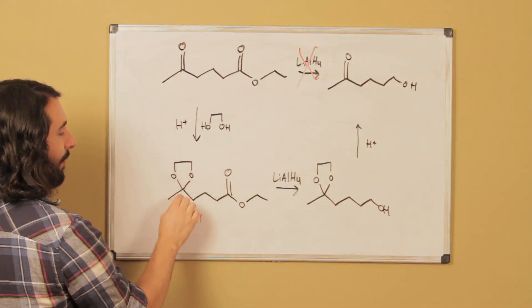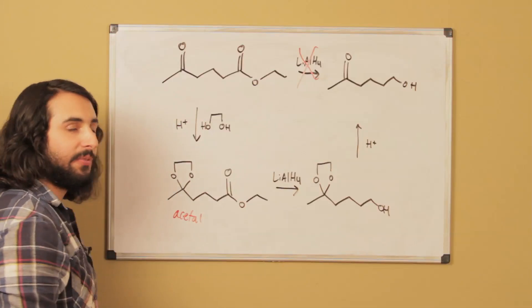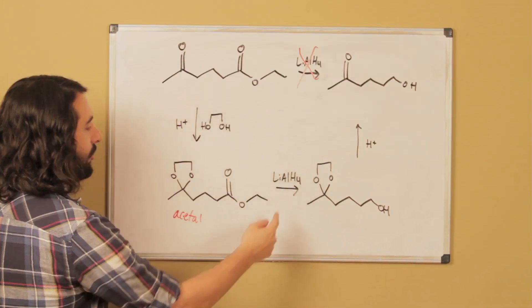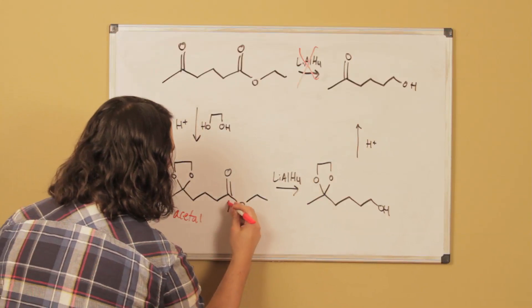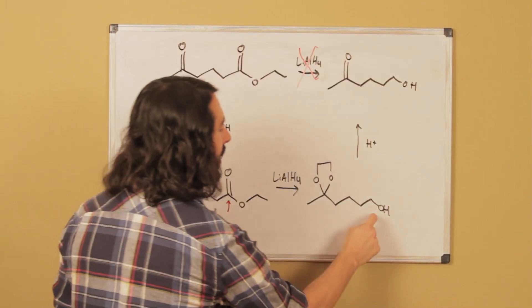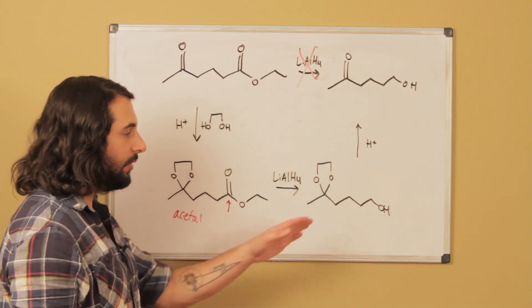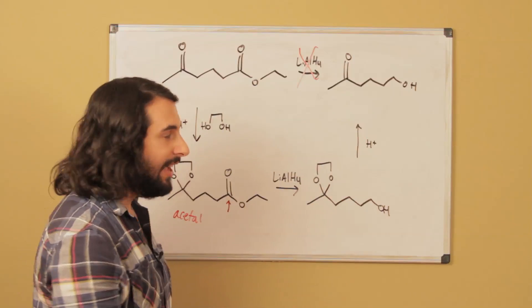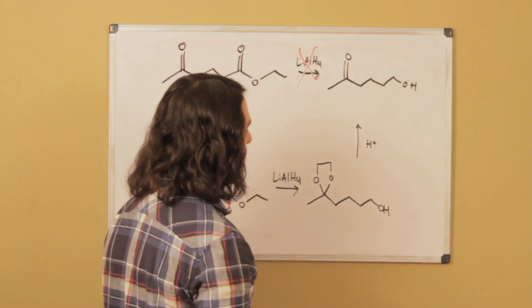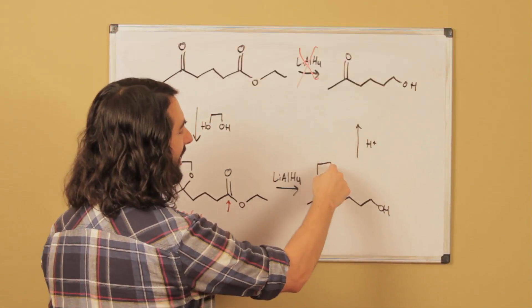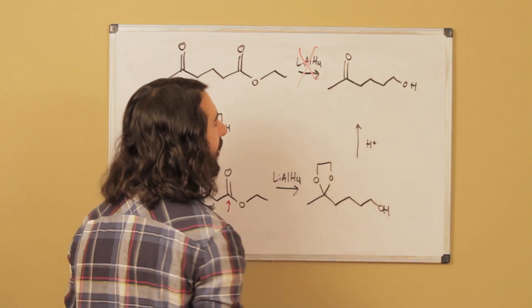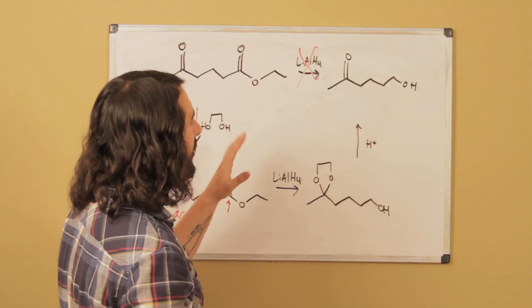It's not going to mess with that because it's not electrophilic enough to be reduced, so instead we're going to reduce just the ester that we wanted. There's the reduced product - we've got that primary alcohol. A little bit of acidic conditions, we're going to be able to deprotect and get back our ketone.